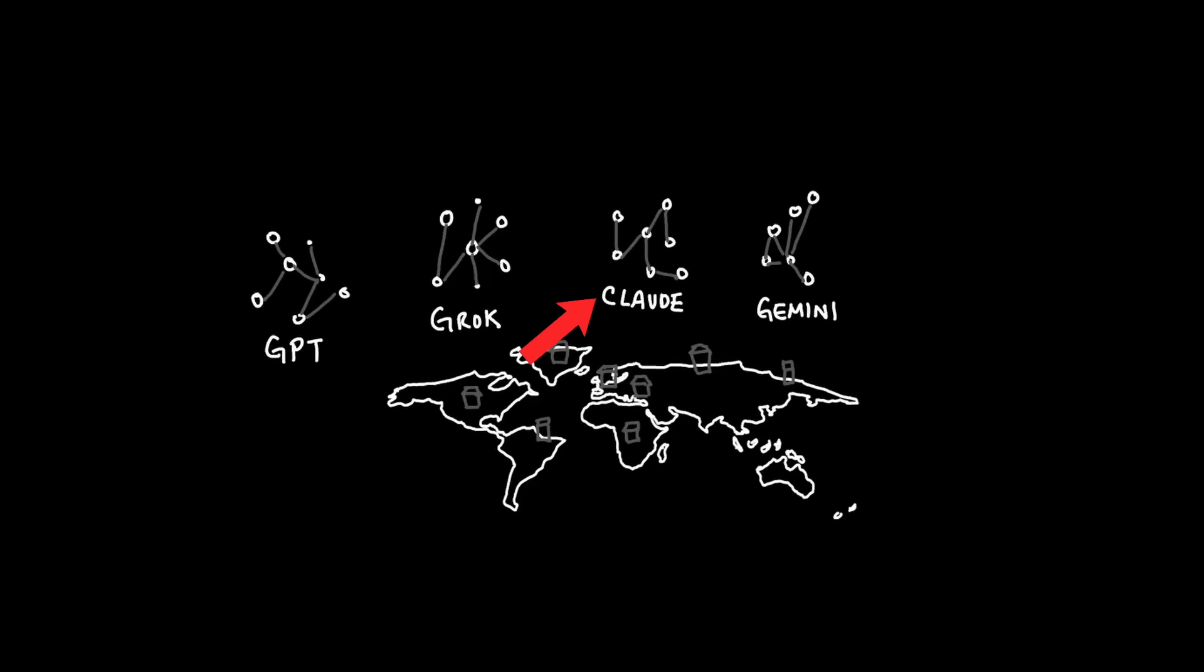Frontier models like GPT, Grok, Claude, and Gemini that run in data centers all over the world need something in common: power. In order to understand the magnitude of the demand in energy, we'll need to understand what it takes to train one large language model and then expand our scope to see the rest of the industry. So let's start with this one question.